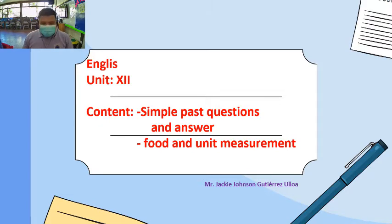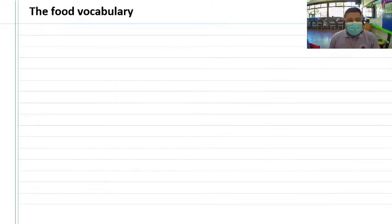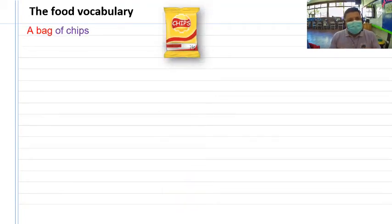Bien, comencemos con lo que es vocabulario, food vocabulary and unit measurement. Tenemos aquí el vocabulario: a bag of chips, eso es una bolsa de papitas. Cuál es nuestra unidad de medida? Una bolsa.